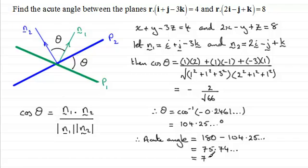And if we round this, say to one decimal place, it's going to equal 75.7 degrees to one decimal place.